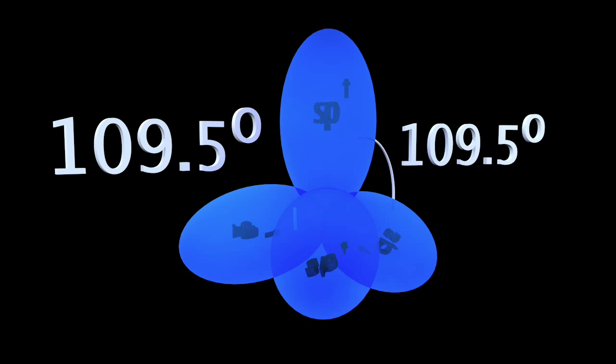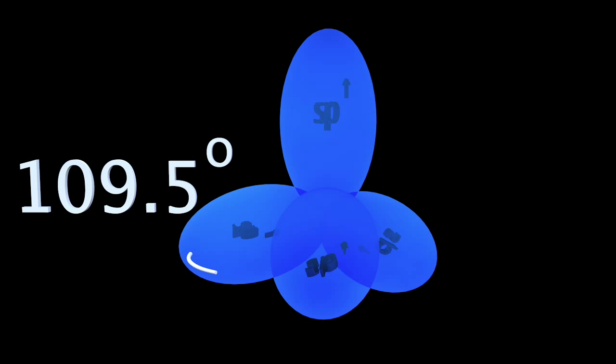We get four new hybrid orbitals, called more specifically sp3 because they were created by mixing one S orbital with three P orbitals. The angle among these new orbitals is 109.5 degrees.